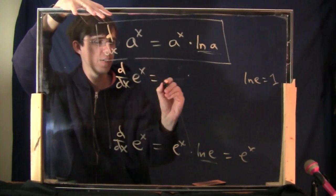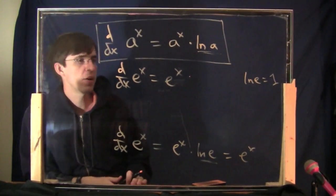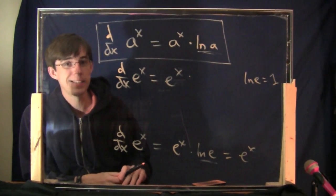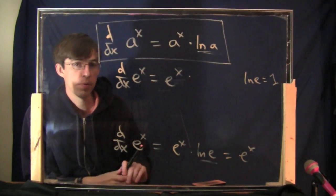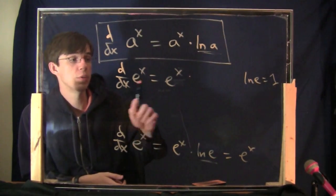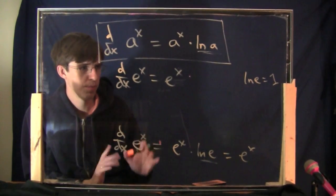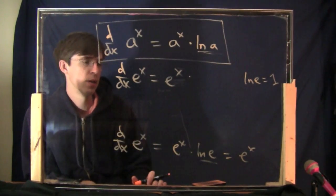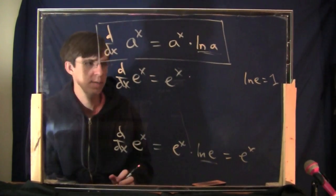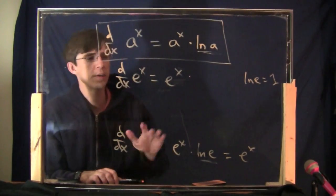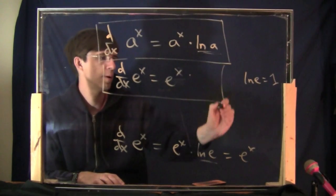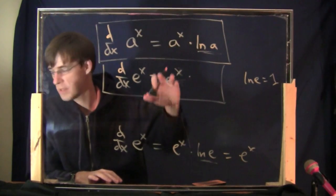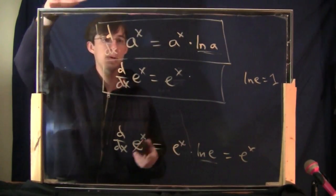The derivative of e to the x equals e to the x. You should put this in a box — it's going to be useful. This is like the greatest derivative formula you've ever seen, just because it's so simple. It turns out e to the x is basically the only function equal to its own derivative. More precisely, the only functions equal to their own derivative are constant multiples of e to the x. Definitely memorize these things.